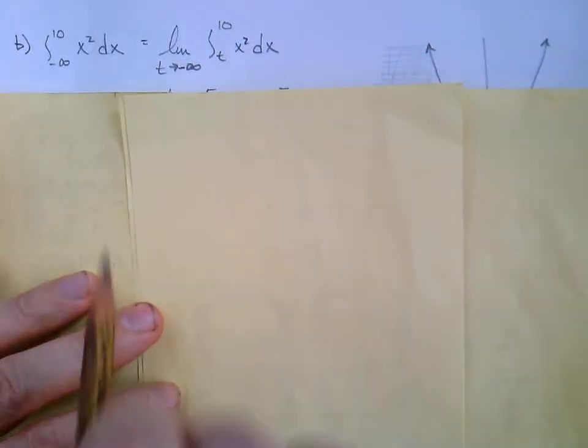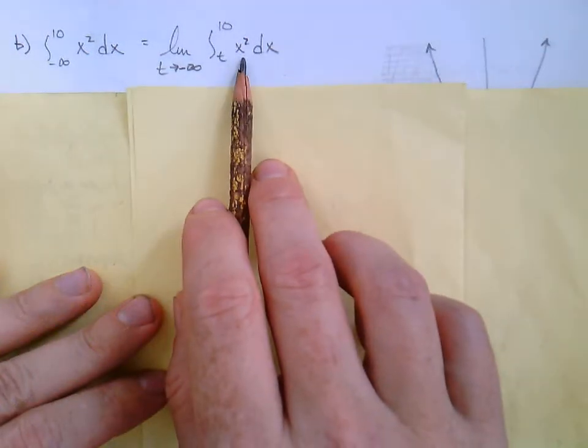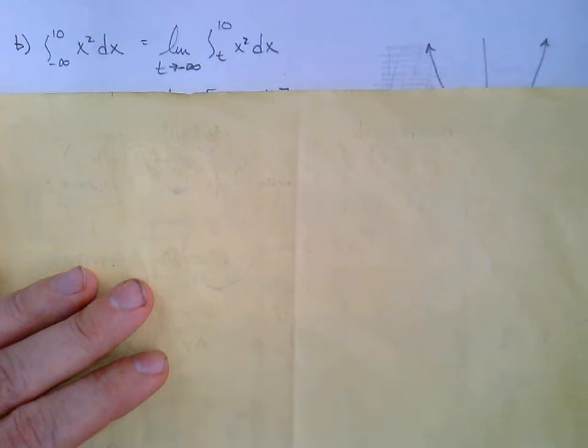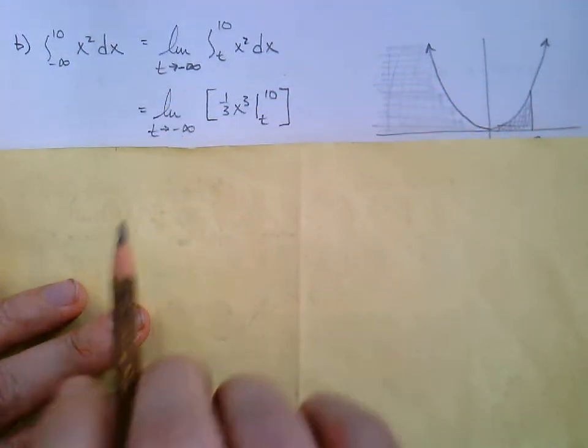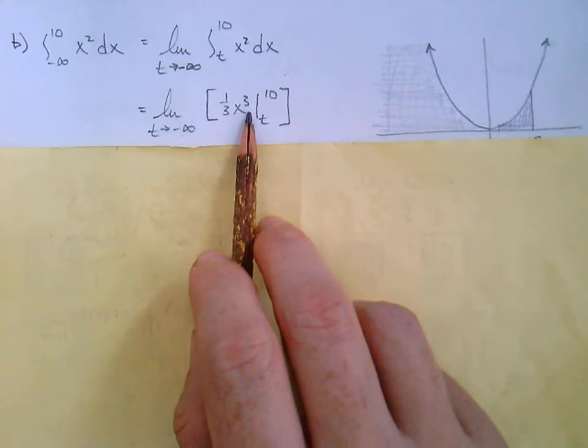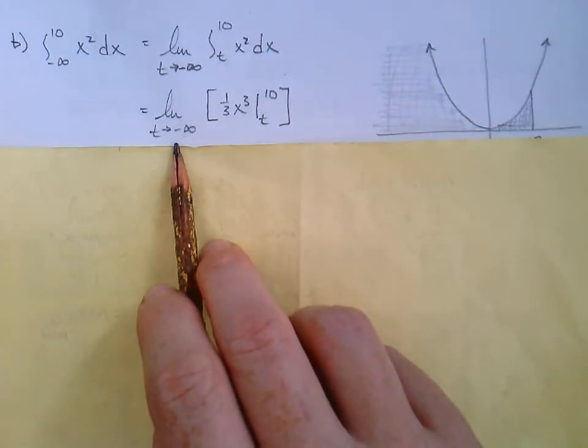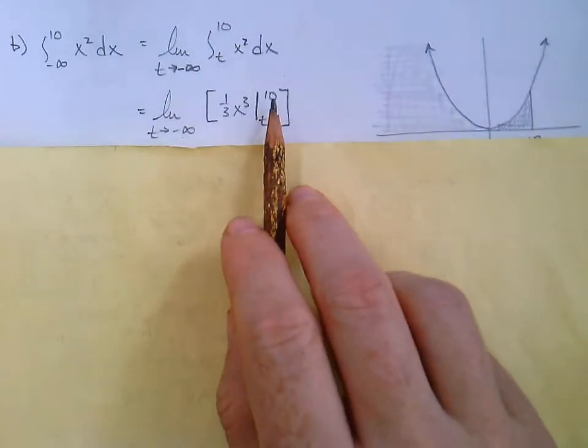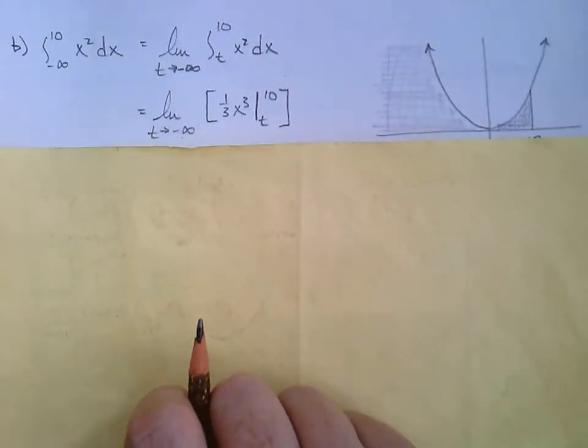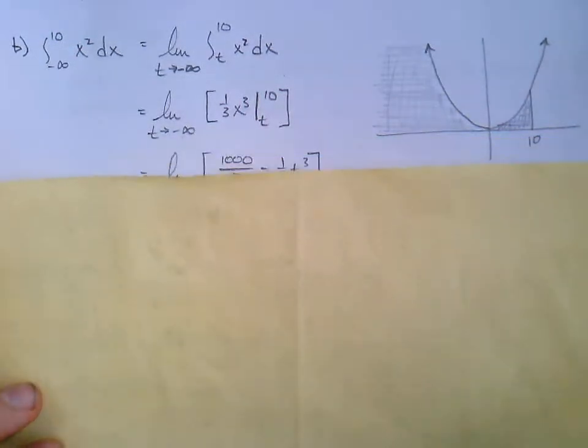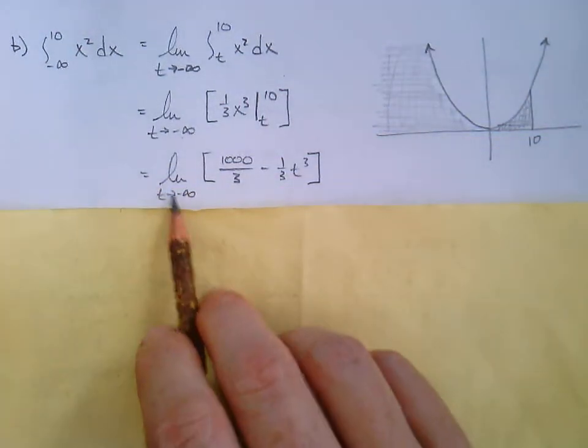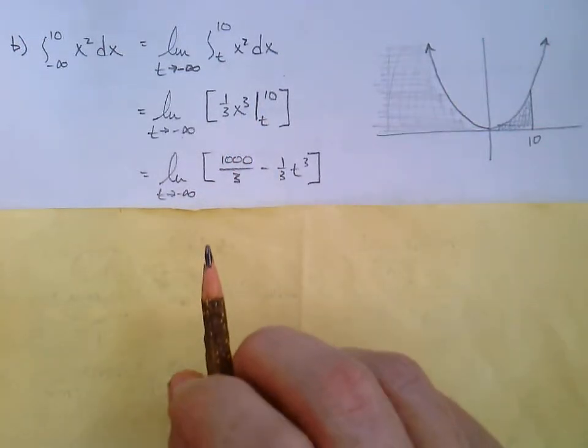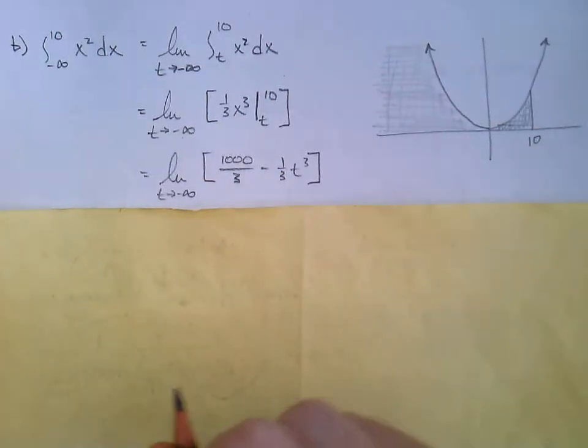Then once you have it rewritten with the limit, now we'll take our anti-derivative. With x squared, that's going to be quite a bit less strenuous. So we got one third x to the third. We still got the limit, of course, and we'll draw our line here from t to 10. Then we'll plug in. So limit as t approaches negative infinity, plugging in the 10, we get 1,000 over 3 minus one third t to the third.